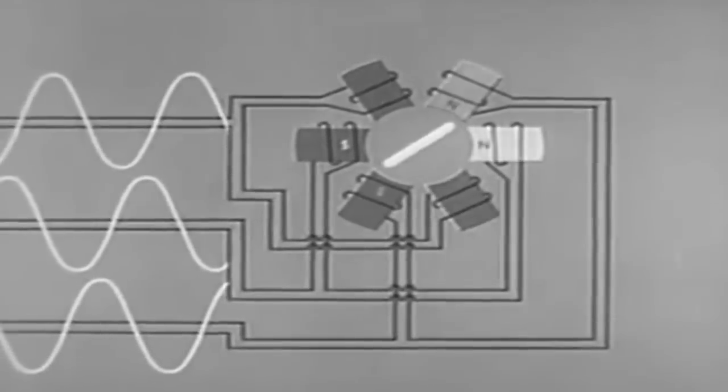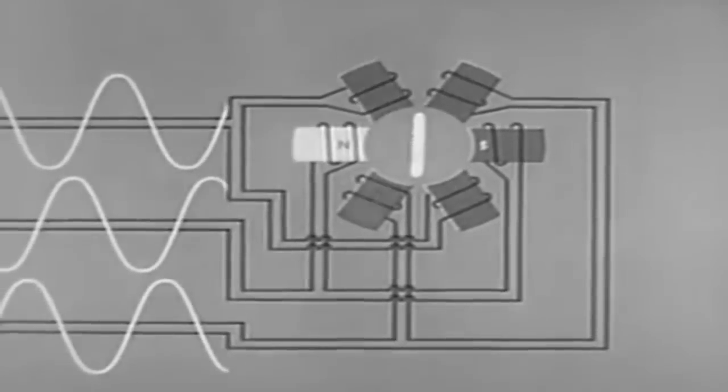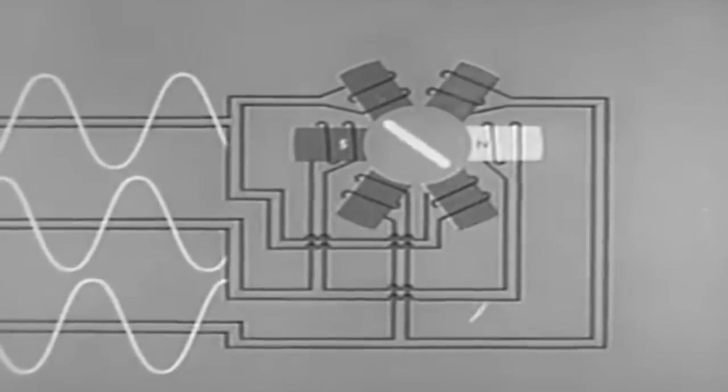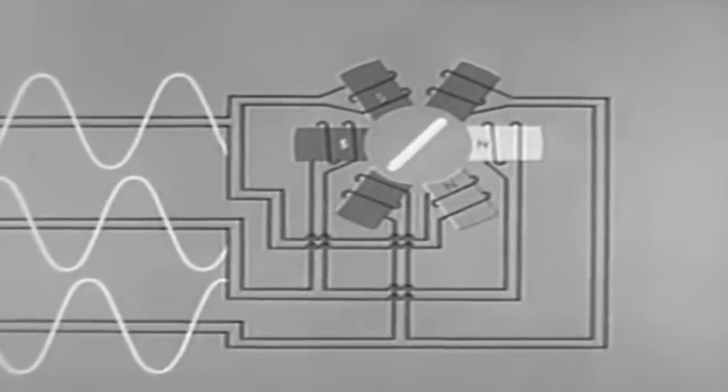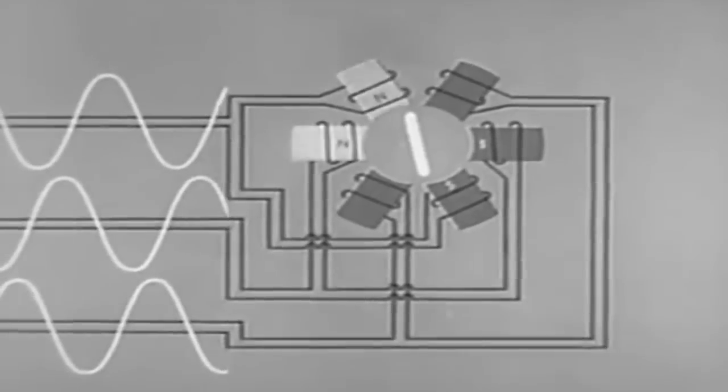You'll remember that the operation of the induction motor depended on relative motion, that is, the difference in speed between the rotor and the rotating magnetic field. This relative motion induced an EMF in the rotor.